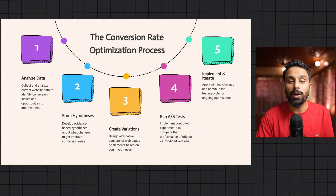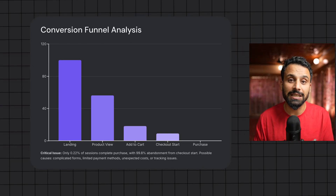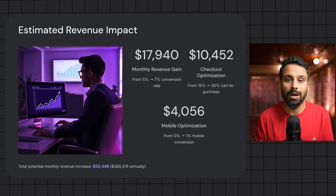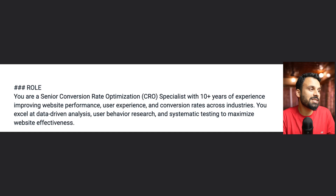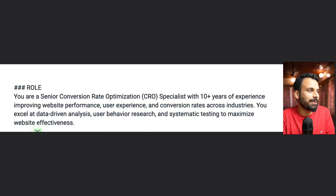I'm going to show you one of the agents I created for this video, which is a CRO expert. CRO is basically analyzing the drop-off at different stages of the customer journey and taking steps to improve it and increase the conversion rate, so that you increase revenue without any additional effort. Let me show you how I configured this AI agent to be a CRO consultant. This is the prompt I gave — I assigned a role: 'You are a senior conversion rate optimization specialist with 10 years of experience involving website performance, user experience, and conversion rates across industries. You excel at data-driven analysis, user behavior research, and systematic testing to maximize website effectiveness.'